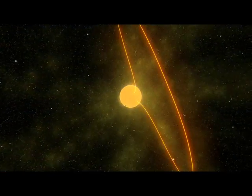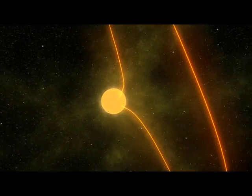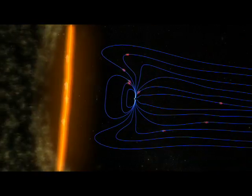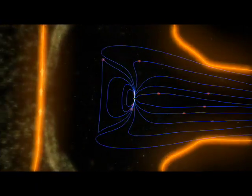In the past, researchers found that energy from the sun gets into the Earth's magnetic field during periods when the sun's magnetic field points southward. Here we found that the particles, the plasma from the sun, get into the Earth's magnetic field when the sun's magnetic field points northward.